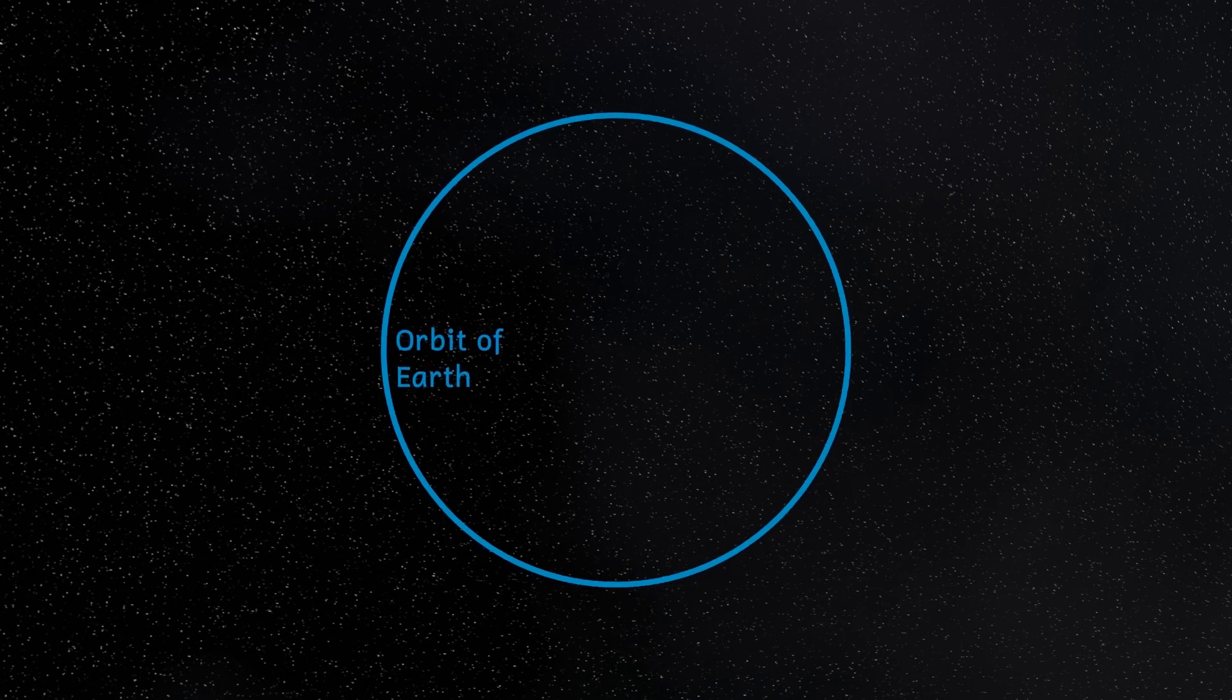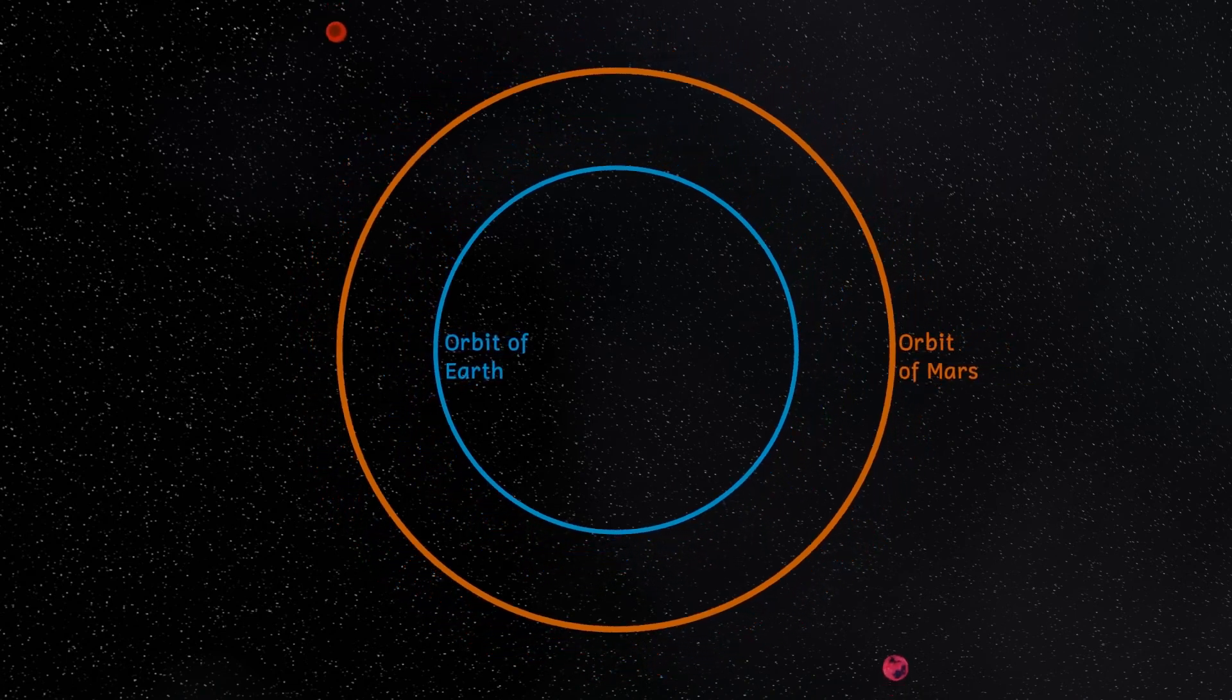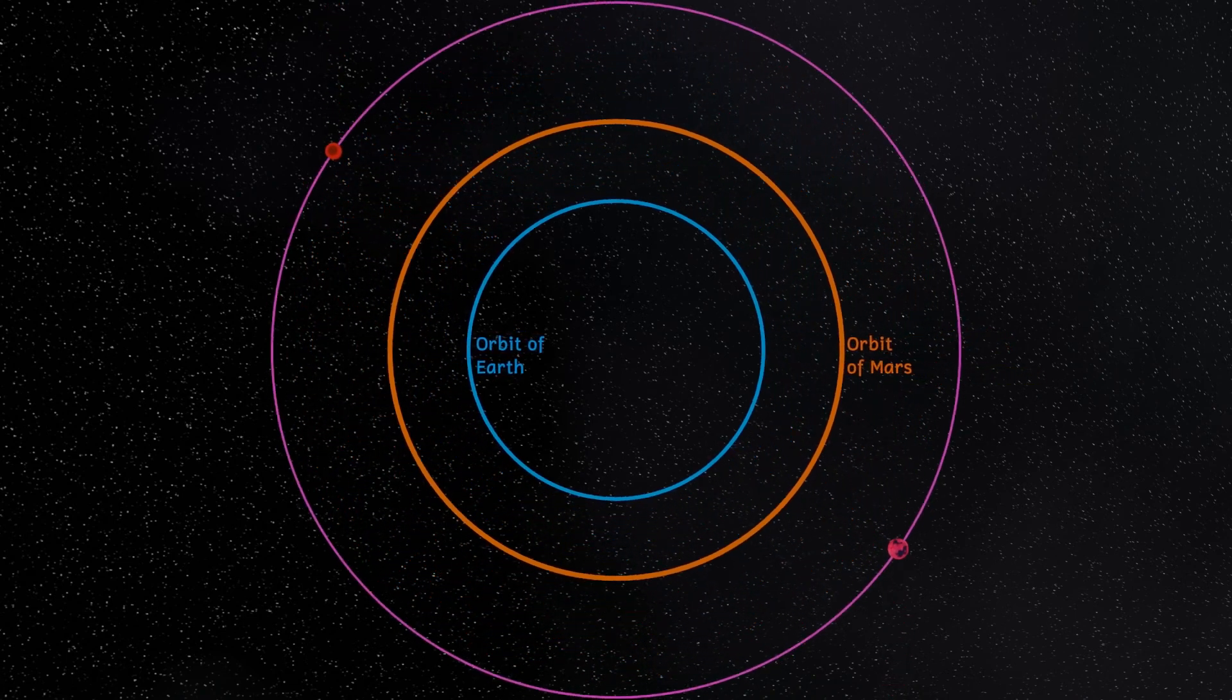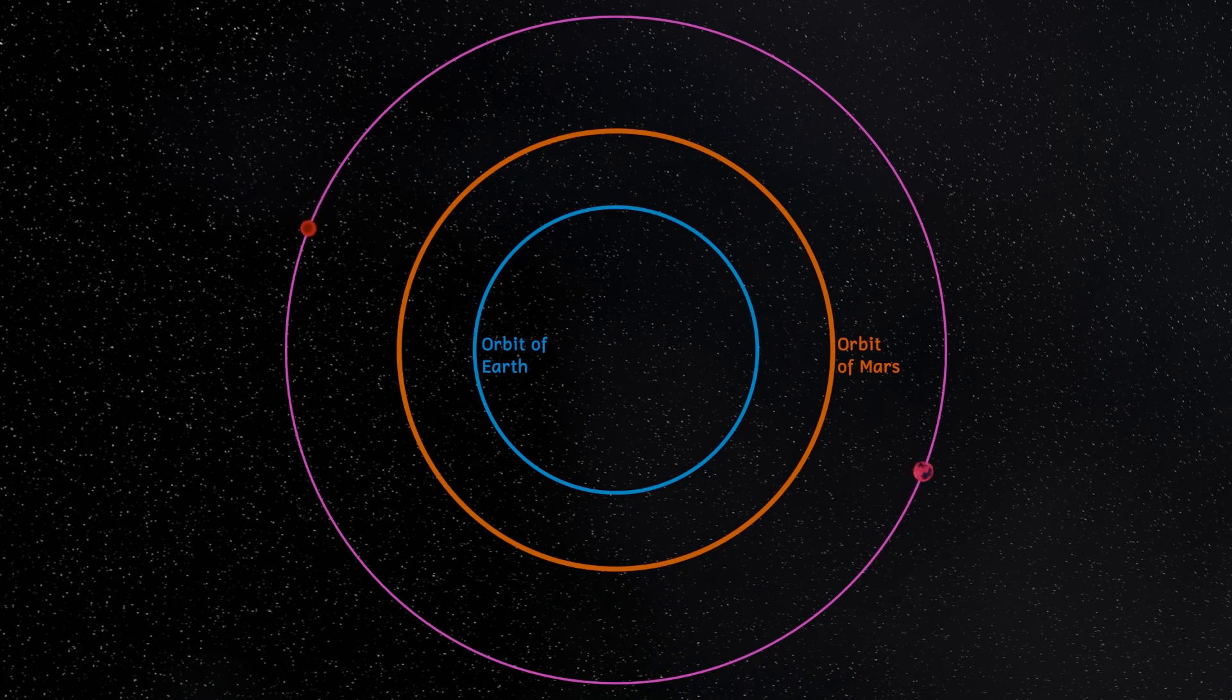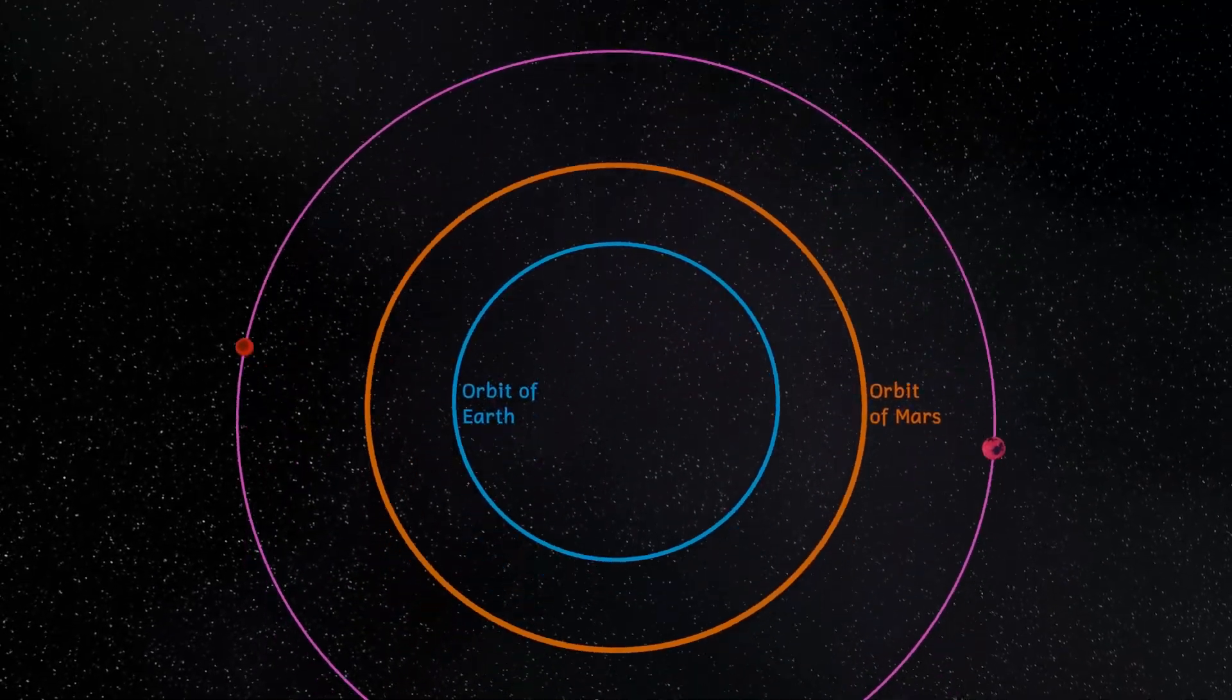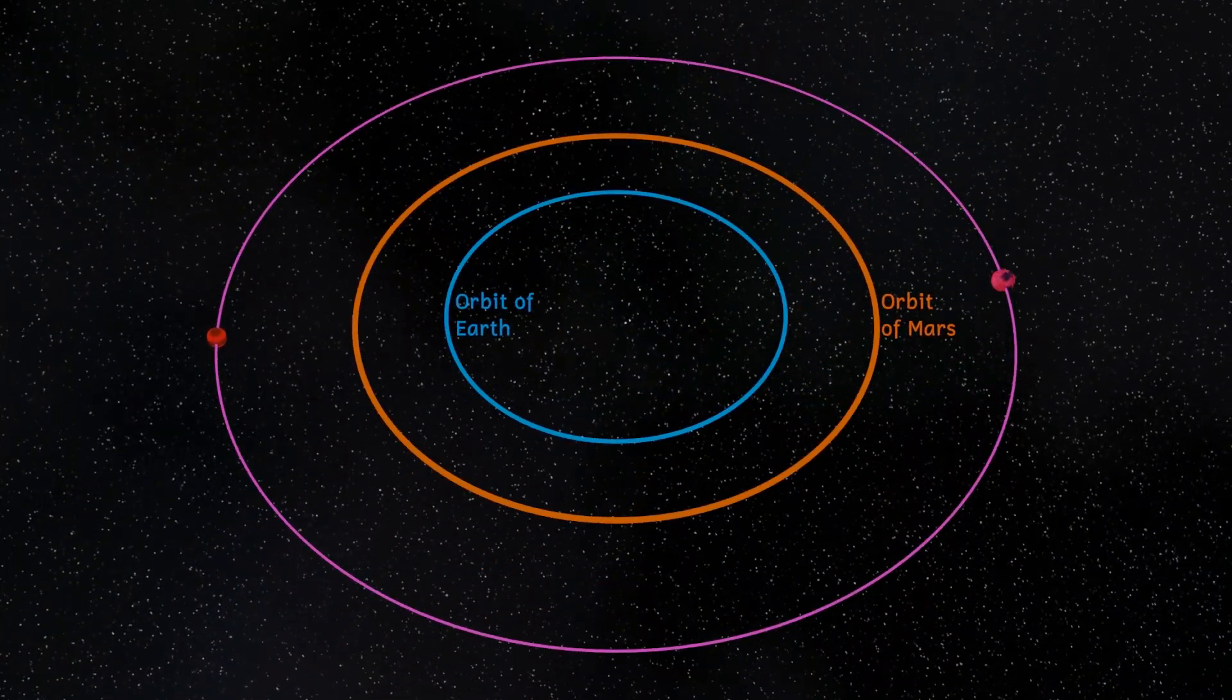These stars orbit the common center of mass at a distance of three and a half astronomical units. That's about the equivalent of the orbit of the asteroid belt in our own solar system and they orbit around each other every 27 and a half years.